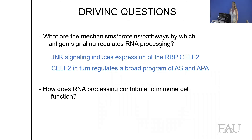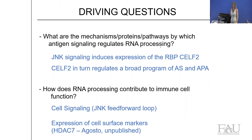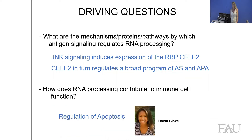I now want to transition to the question: does all of this matter? We can shift splicing and polyadenylation — but do these changes have functional consequences on the cell? We already know the MKK7 splicing events are important to propagate cell signaling through a JNK feed-forward loop, and we're also working on how changes in splicing regulate gene expression through epigenetic factors and transcription factors. But we're particularly excited about new data on the regulation of apoptosis.